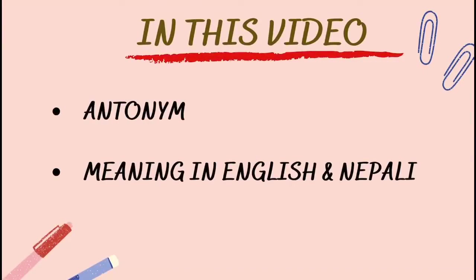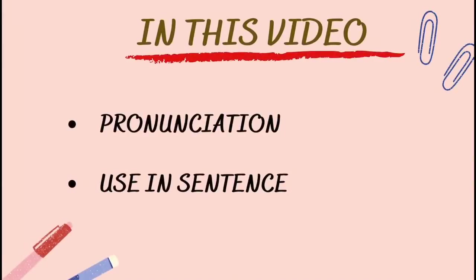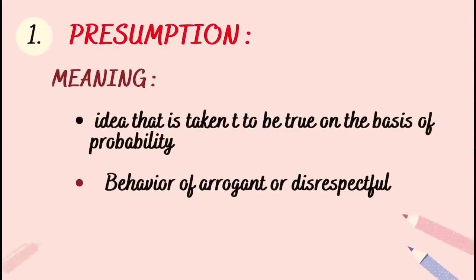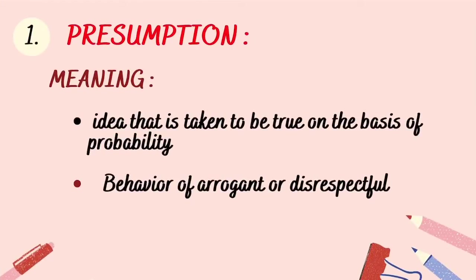Pronunciation and using sentences. Let's get started. The first vocabulary is 'presumption.' Presumption means an idea that is taken to be true on the basis of probability. When you take an idea which is not proven to be true and you are taking that idea on the basis of the probability that it might be true, you don't have any facts or evidence to prove that the idea is true.